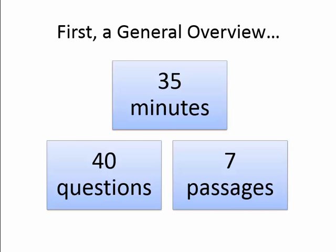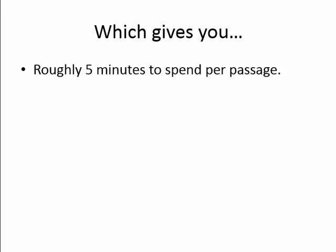Let's take a quick look at how the test breaks down time-wise. You have 35 minutes to do 40 questions. These 40 questions are divided into 7 different passages that each presents you with different scientific experiments, studies, or theories. That gives you roughly 5 minutes to spend on each passage, which generally means less than a minute per question, not including the reading time that you need to answer some of these questions.